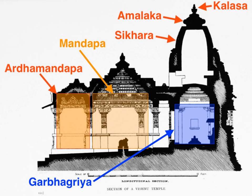Around this chamber there are often other structures and buildings, in the largest cases covering several acres. On the exterior, the Garbhagriha is crowned by a tower-like Shakara, also called the Vimana in the south. The shrine building often includes an ambulatory for parikrama, a mandapa congregation hall, and sometimes an antarala antechamber and porch between Garbhagriha and mandapa.